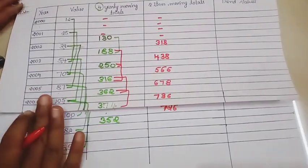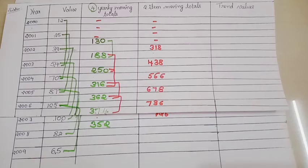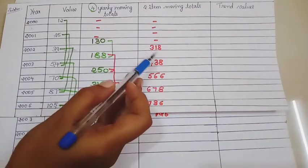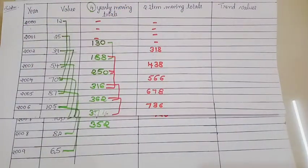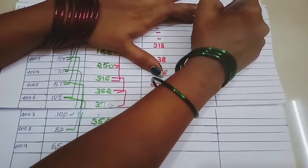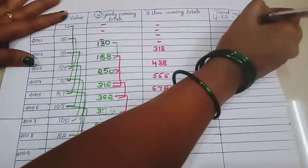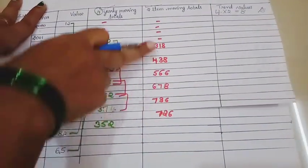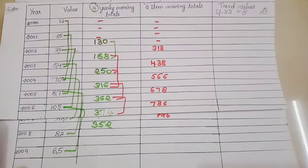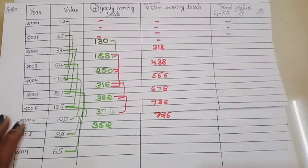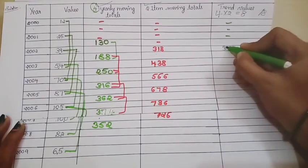Now for the last step, we calculate the trend values. You need to divide all the two item moving total values — but not by 4, and not by 2. You divide by 4 into 2, which equals 8. So all the red values must be divided by 8. Where there are no numbers we write nil. Starting: 318 divided by 8 equals 39.75. All values are divided by 8 and the trend values are written in the final column.